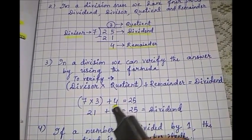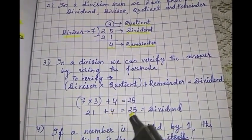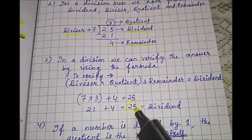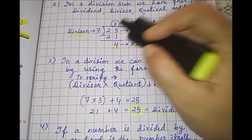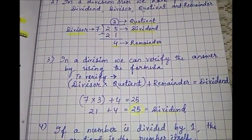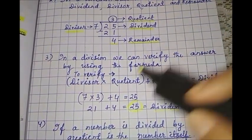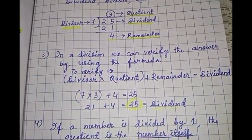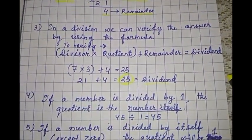So 7 times 3 is 21 plus 4. 21 plus 4 equals 25. So this 25 is the dividend. See, is it matching? Yes. So that means your division is correct. By applying this formula to verify, we can check whether our division is right or wrong.